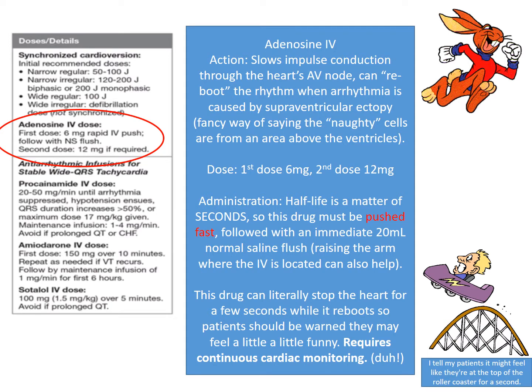The first medication — not the first intervention, we start with the algorithm above — is adenosine. It's used for narrow complex tachycardias or regular wide complex tachycardias with a nice regular rhythm. The first dose is six milligrams rapid IV push — and I mean rapid, fast, fast, fast. This medication has an incredibly short half-life of seconds. Adenosine is a natural chemical found in our body.